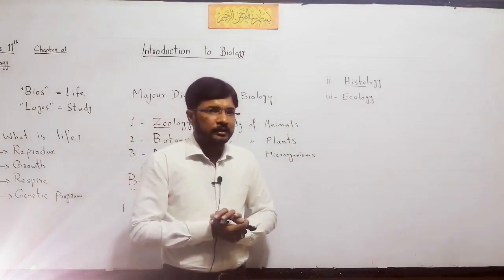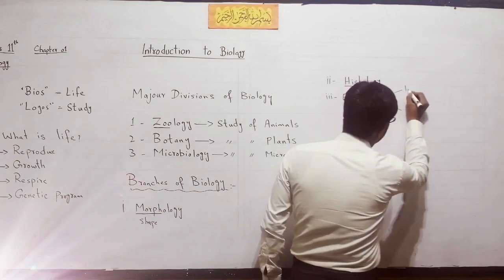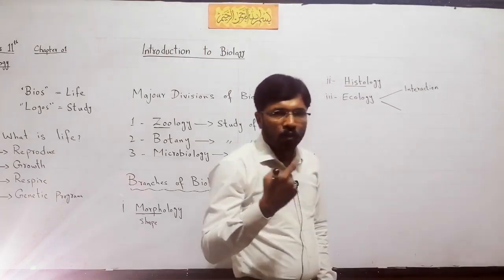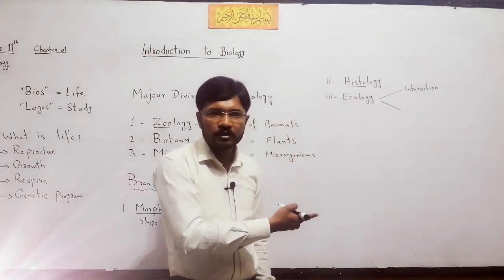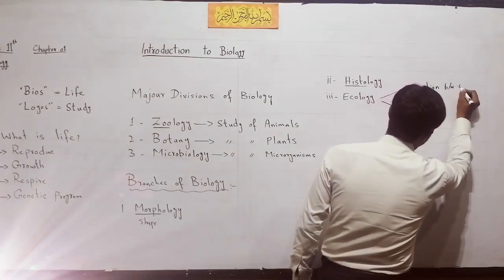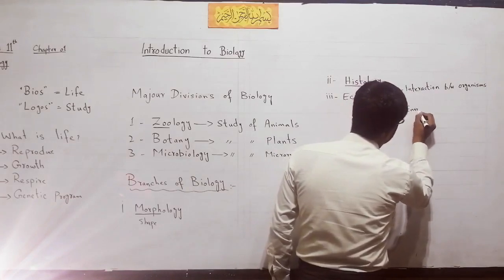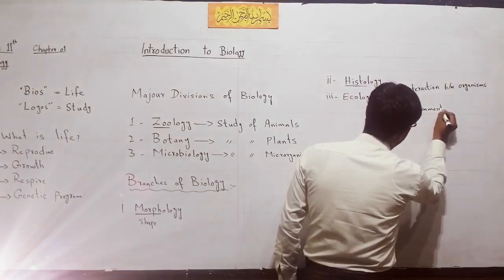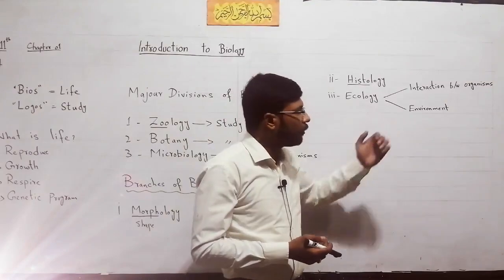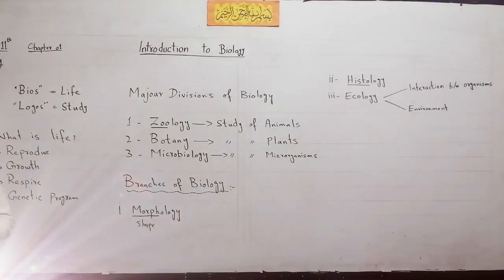The third branch is ecology. In ecology, we talk about the interaction of organisms — their interaction with their own kind and with their environment. So in ecology we discuss organisms' interactions with each other and with their environment.